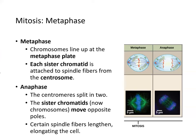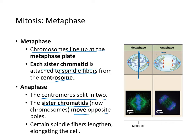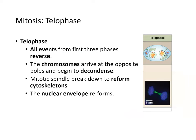During metaphase, chromosomes line up at the metaphase plate in the center, and each sister chromatid is attached to spindle fibers at the centrosomes. In anaphase, the centromeres split in two and sister chromatids move toward opposite poles. Certain spindle fibers lengthen and elongate the cell to create the space needed.